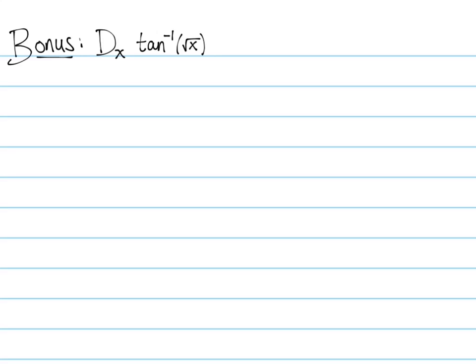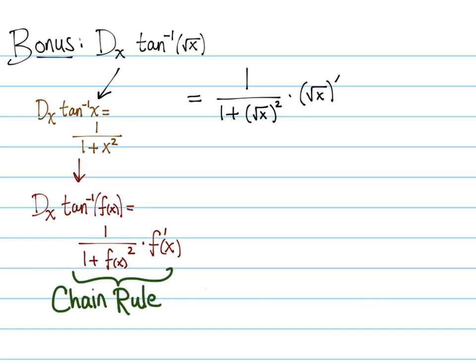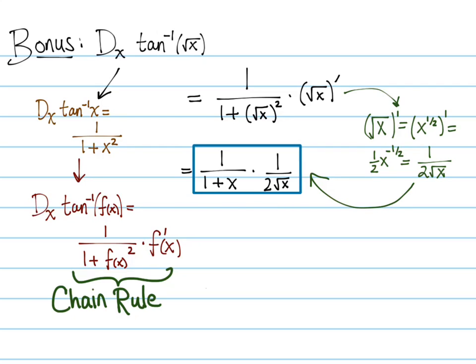As a bonus, let's do a chain rule example with one of our new derivatives: the derivative of arc tangent of radical x. The derivative of arc tangent is 1 over 1 plus x squared. Applying the chain rule, we plug in f(x) and multiply by f prime of x. We get 1 over 1 plus (radical x) squared, times the derivative of the square root of x, which is 1 over 2 radical x. So the result is 1 over (1 plus x) times 1 over 2 radical x.